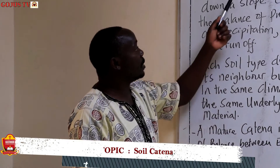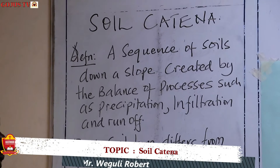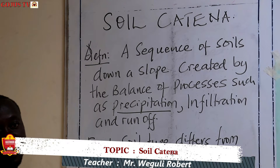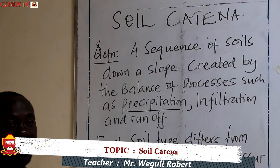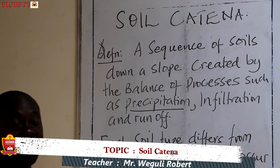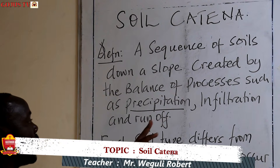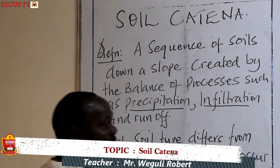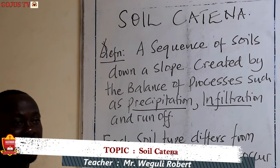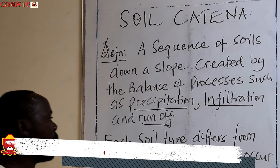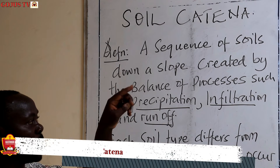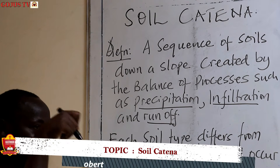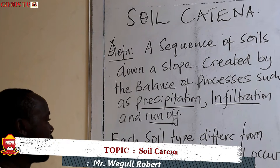The soil catena is a sequence of soils down a slope created by a balance of processes such as precipitation — the amount of rainfall received, or in other countries it could be in the form of snow or ice, like on Mount Rwenzori or Mount Kilimanjaro, which receive precipitation on the tops in the form of ice or snow. Then there is infiltration — how much of that water goes into the ground surface. And runoff, which is basically where the rate of precipitation exceeds the rate of infiltration. If the rainfall amounts are higher than what is being infiltrated into the ground, you will create what you call a runoff.